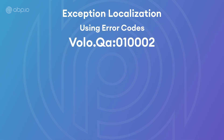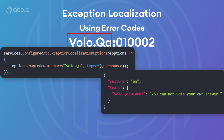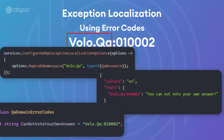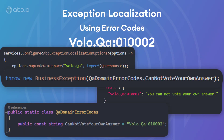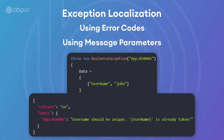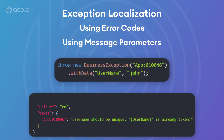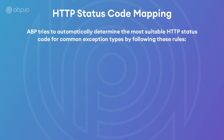The other model uses error codes. First, you grab the code namespace and define it in the localization resource mapping in the module configuration. Then you fill in your localized error codes, put them in constant strings, and call those strings in your business exceptions. For message parameters, you can set them with the exception's data property. As for HTTP status codes, for common exception types ABP tries to automatically determine the most suitable HTTP status code by following built-in rules.